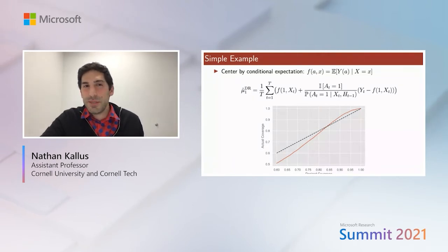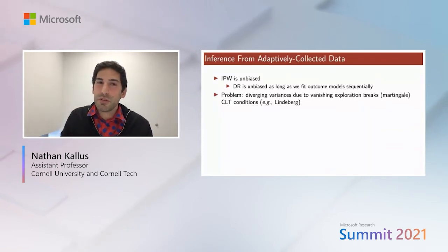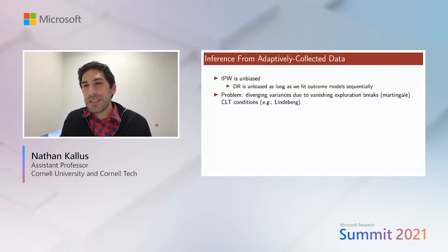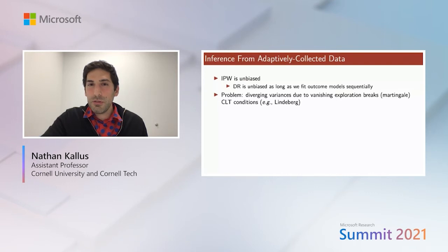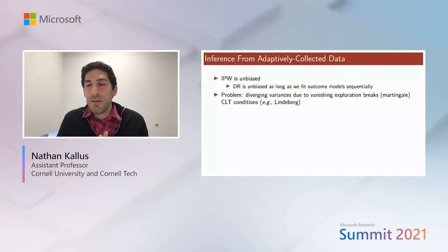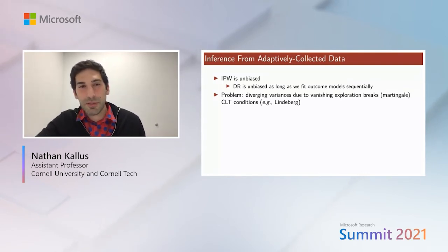Both IPW and DR estimators are unbiased, and DR remains unbiased even with plug-in estimates of F based only on history so far — a sort of cross-fitting across time. The problem is that each term being averaged has violently different variances. When running a bandit, exploration diminishes slowly, so for larger t, the overlap between the evaluation action and the historically taken action diminishes to zero and variance grows with t. This average of random variables with very different variances breaks the conditions of the martingale CLT.